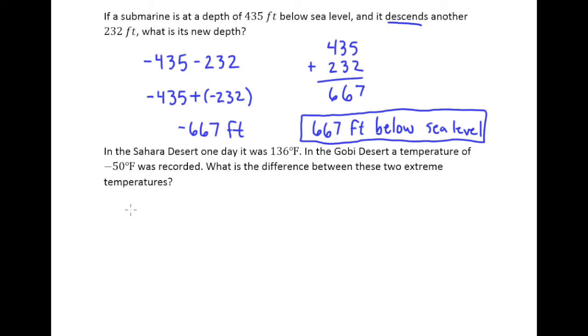In this example, it says in the Sahara Desert one day it was 136 degrees Fahrenheit. In the Gobi Desert a temperature of negative 50 degrees Fahrenheit was recorded. What is the difference between these two extreme temperatures? They're asking for the difference, so that indicates subtraction. So we are taking 136 minus negative 50.